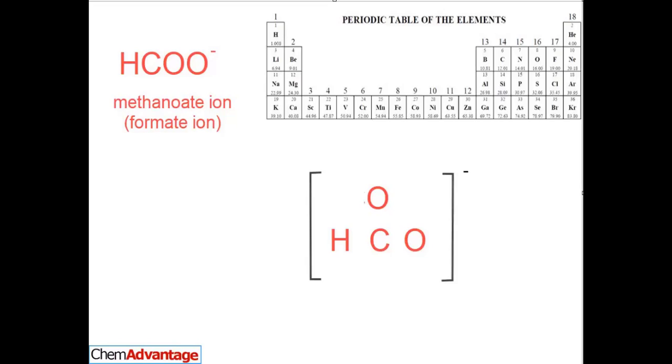Here we are with another Lewis dot structure, of a molecule that's been drawn for us. In this case, it's the methanoate ion. This is a polyatomic ion.